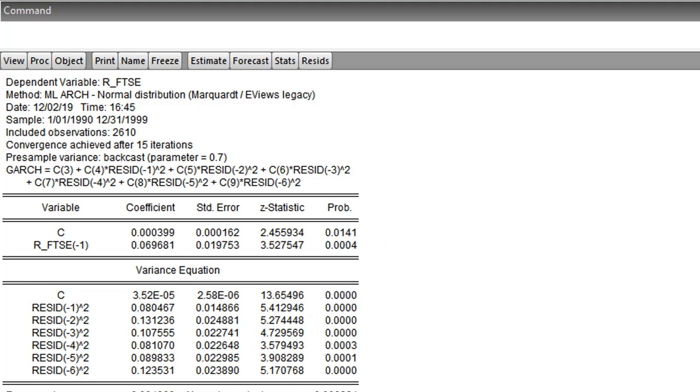What do you observe? Number one, you will see that all the coefficients for the variance equation, which is our concern here, are all statistically significant at the 1% level. All the coefficients are also positive. We do not have any negative coefficients.